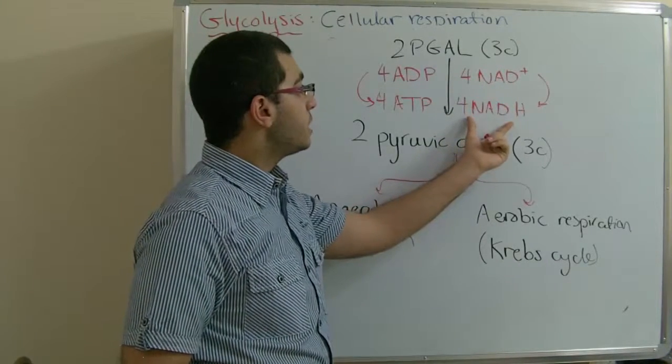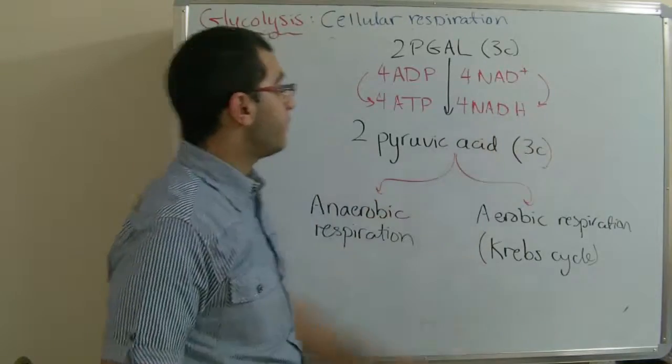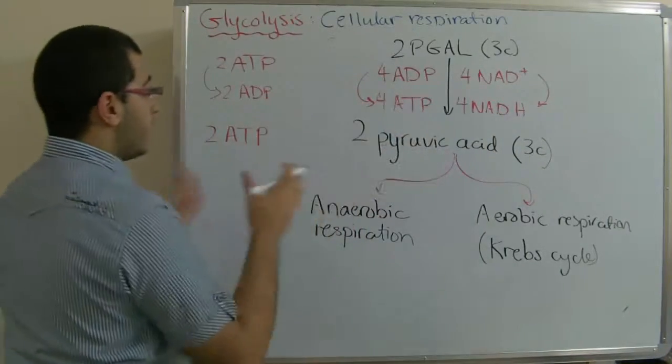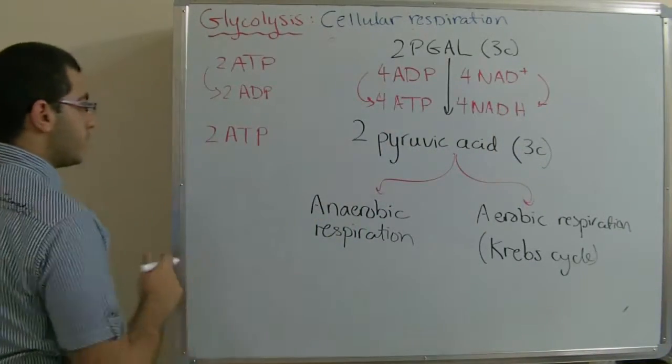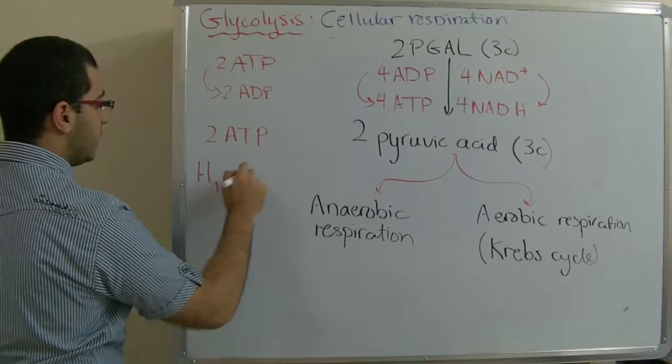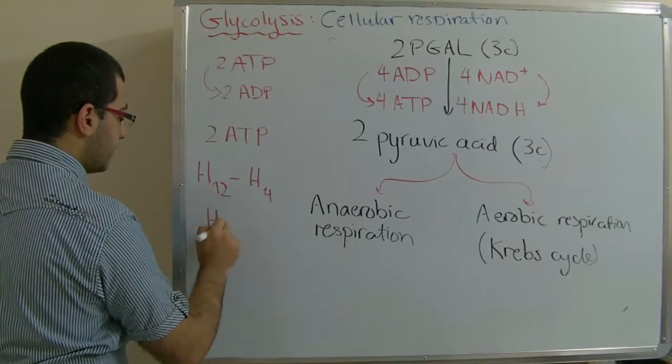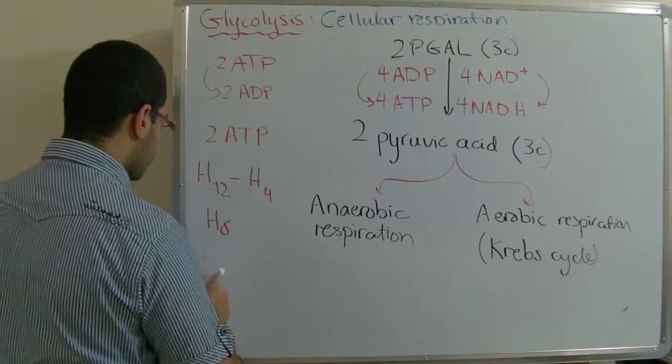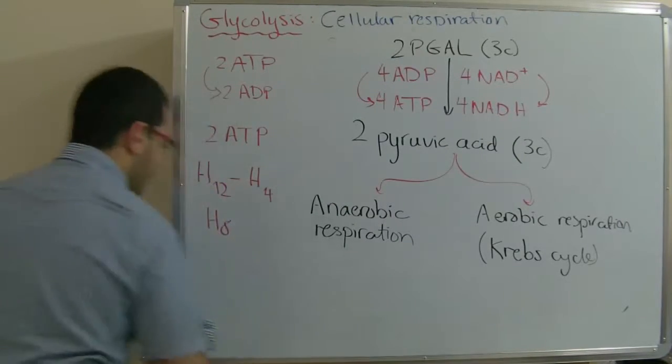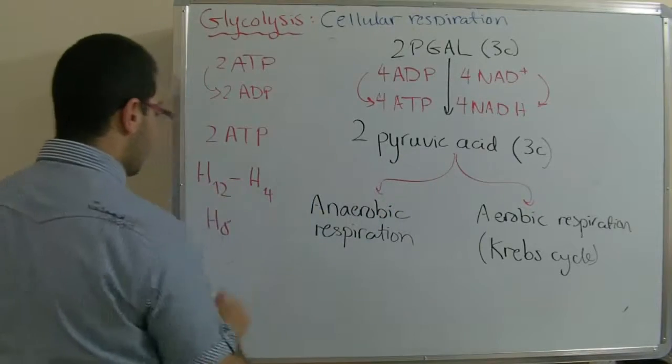With four NAD+ molecules reduced into four NADH, from the original content of the glucose, which contained twelve hydrogen, minus four equals eight, which is the hydrogen in the pyruvic acid structure.